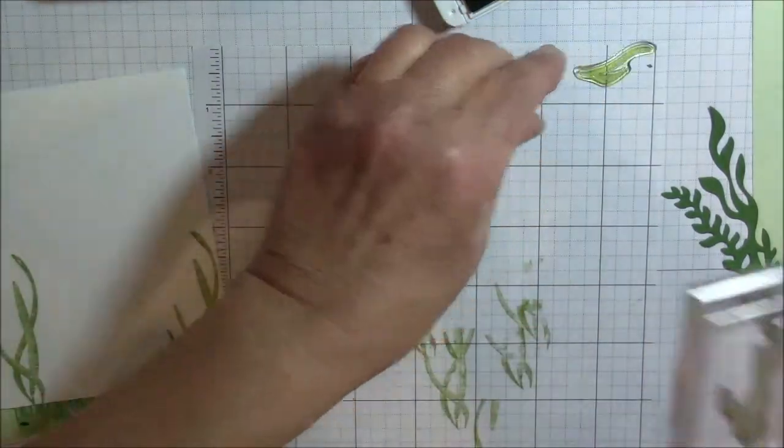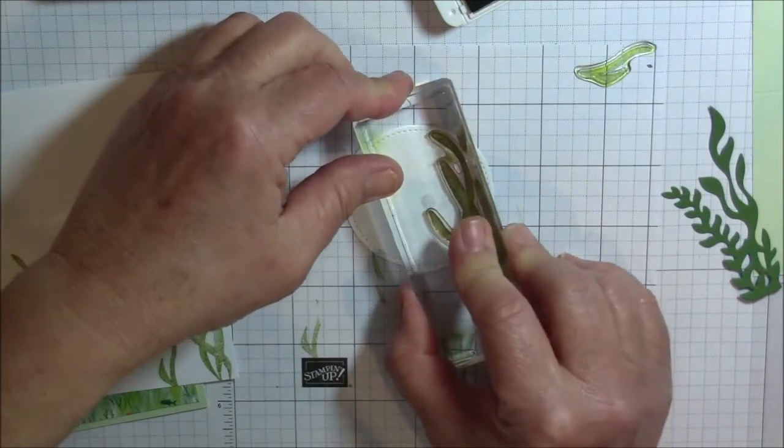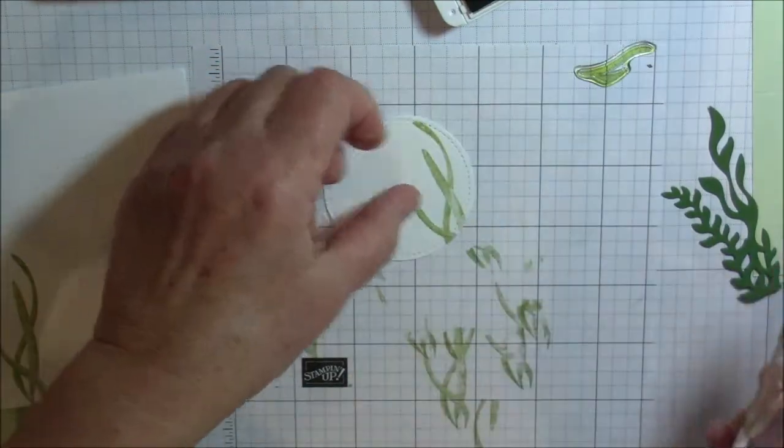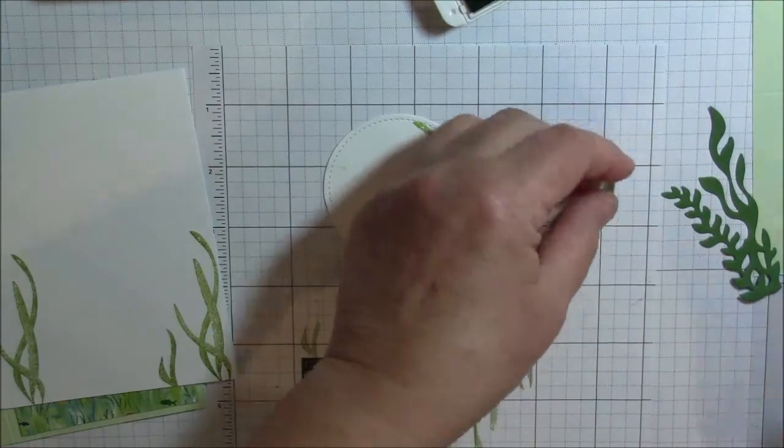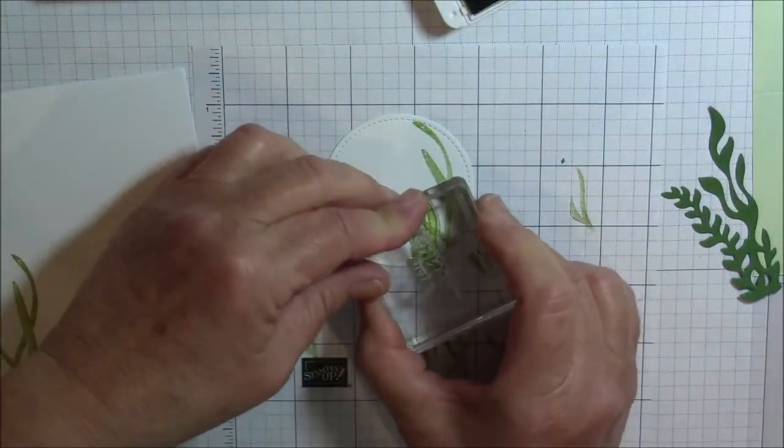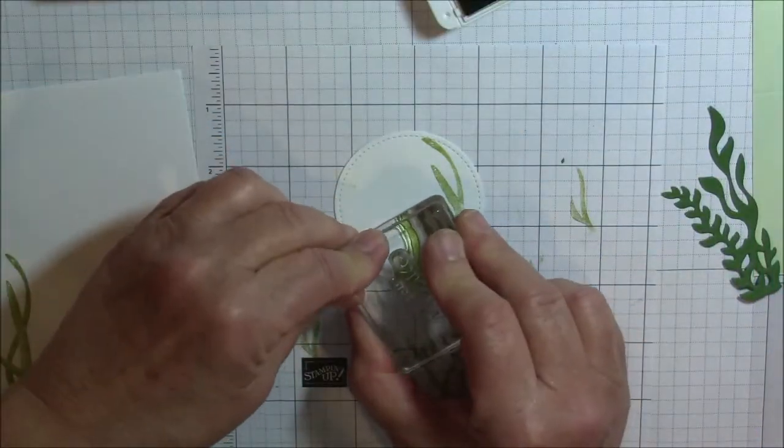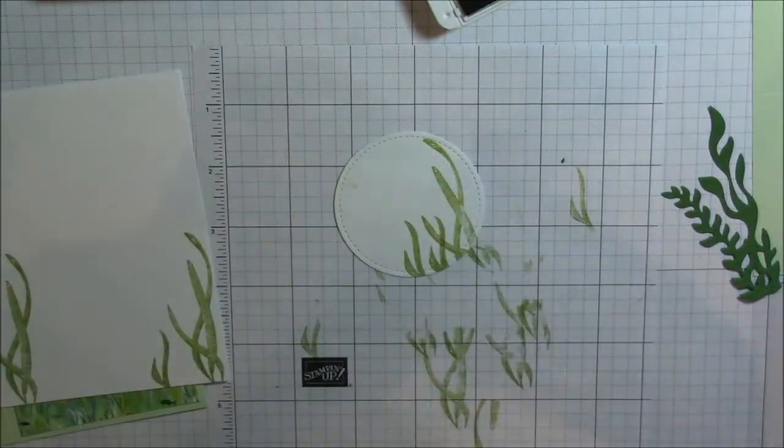I think I am going to take that one off. I will add that in a second. So we have that. I am going to stamp a couple of these small ones along the bottom here.